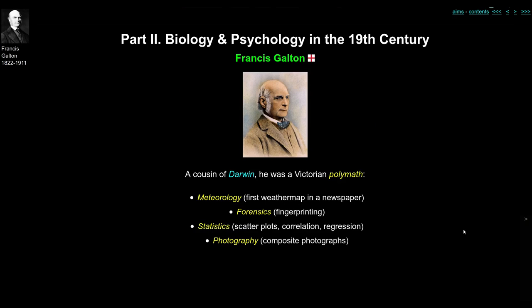Darwin directly influenced many psychologists. One of the first was Darwin's cousin, Francis Galton — a polymath with independent funding who contributed to many fields. He put weather maps in newspapers, invented fingerprinting methods in forensics, developed scatter plots, correlation, and regression in statistics, and in photography came up with composite photographs, where multiple photographs are exposed into the same image.